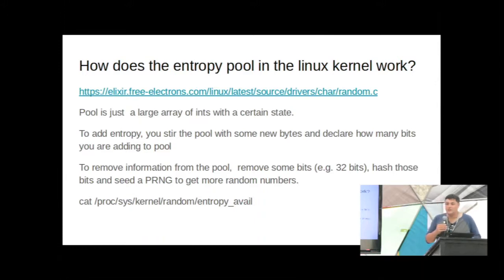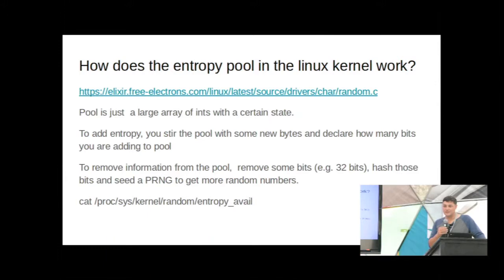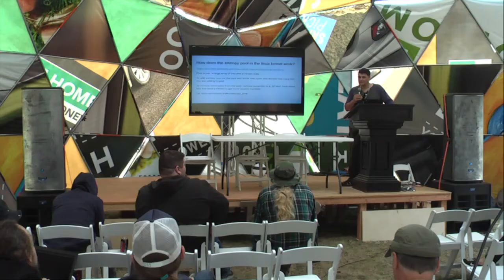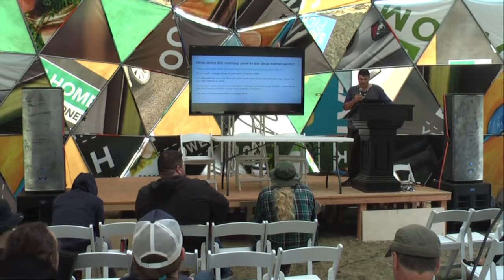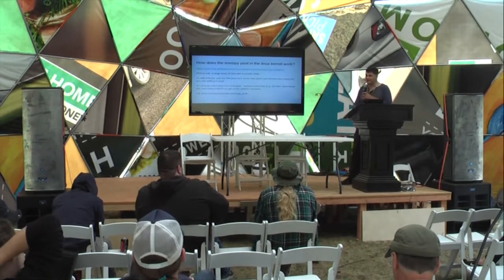Audience member: The project is called Untwister. It's on GitHub. It's a Bishop Fox project — Joe DiMessi and Dan Petro are the two cryptographers. Jeff: Thanks, just wanted to get that on record.